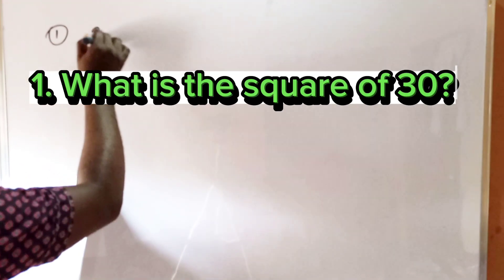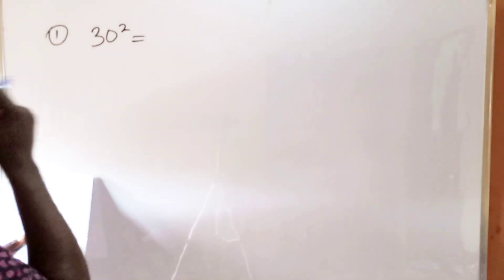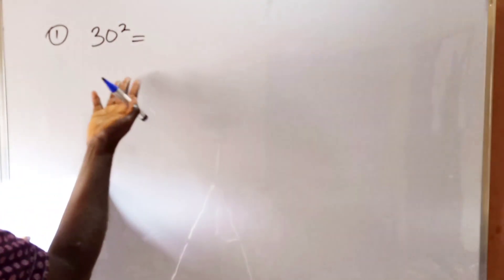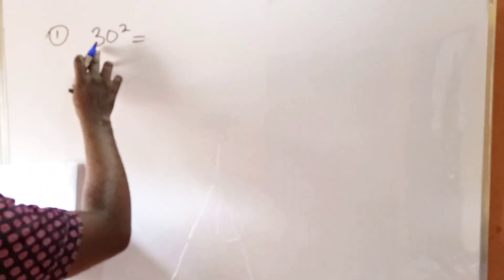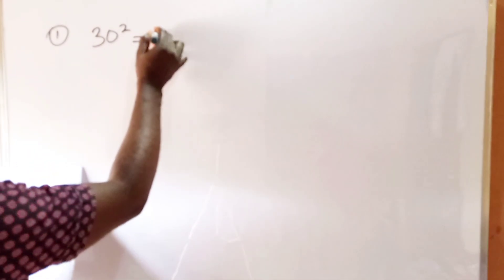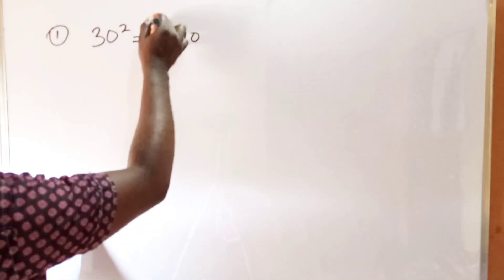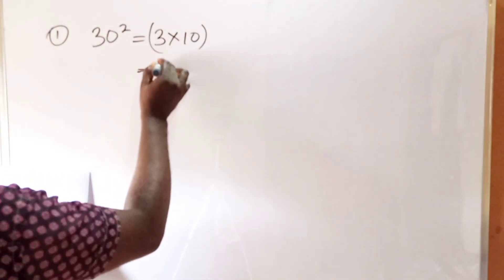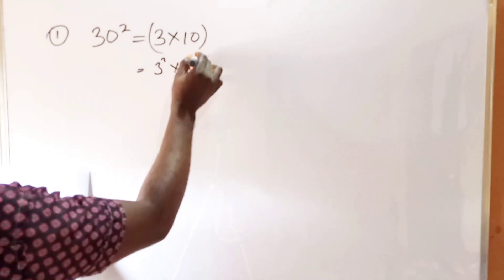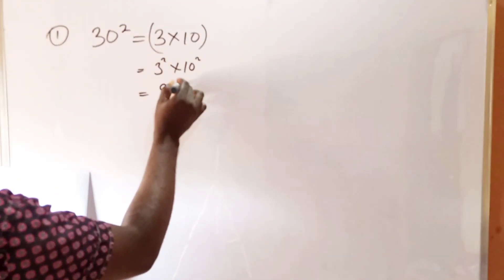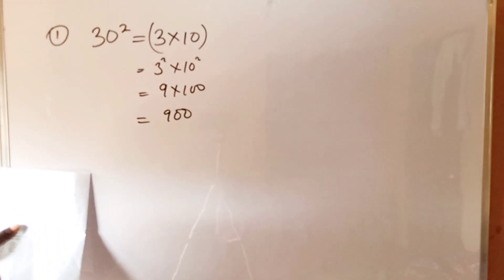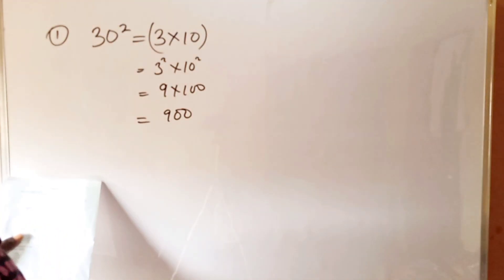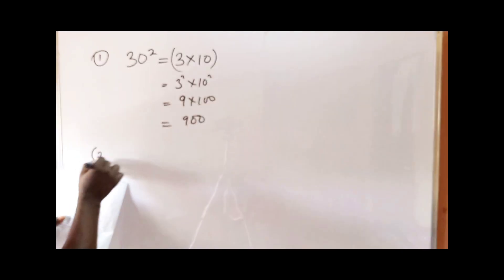The first question asks us to find the square of 30, that is 30 squared. There's no need to use a calculator. What we're going to do is express 30 as 3 times 10, and when you square it that is 3 squared times 10 squared, which gives 9 times 100, and that gives us 900.